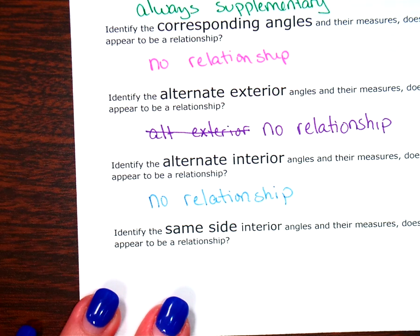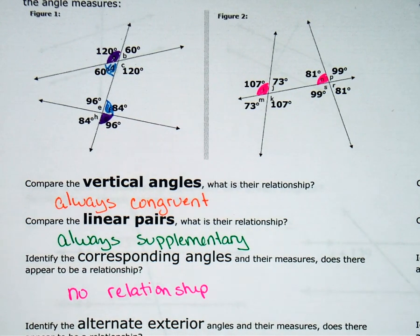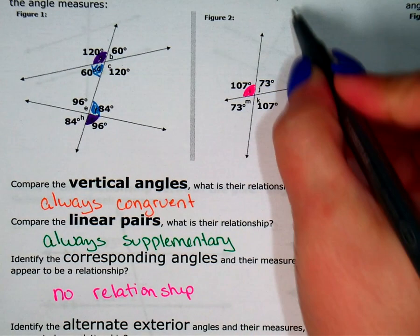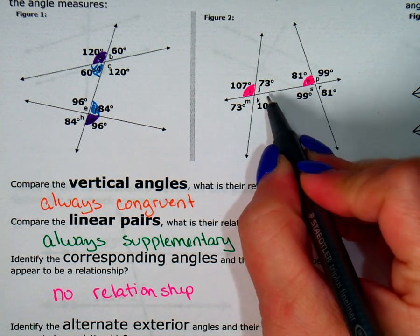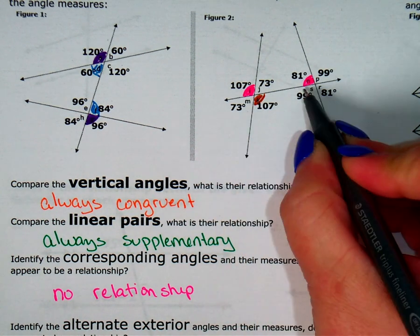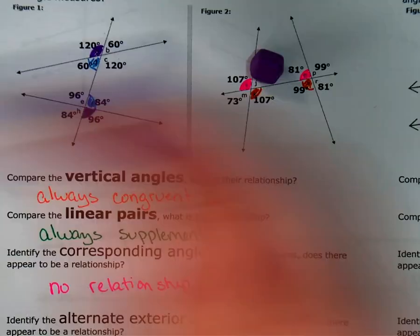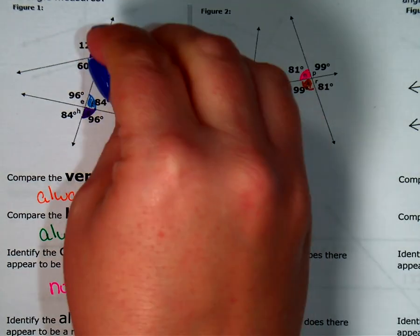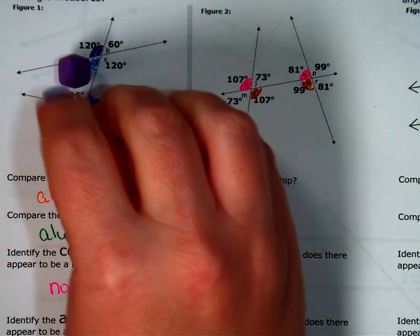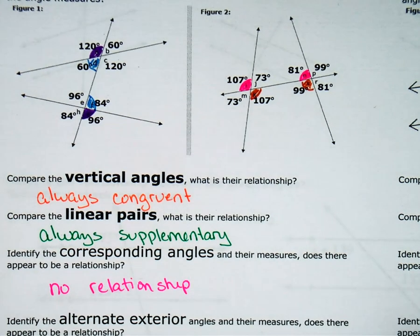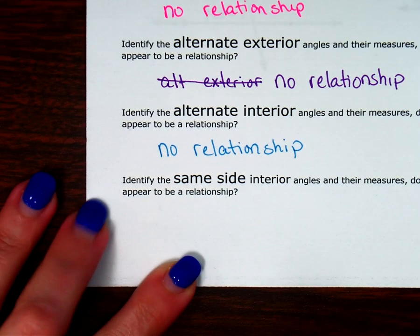Lastly, let's see if there's a relationship with same-side interior angles, which we also call consecutive interior angles. That's the two angles inside the two lines on the same side of the transversal. 107 and 99 — that's about 206, so that doesn't work. The 73 and 81 — that doesn't work either. Over here, 120 and 84, and 60 and 96 — those don't really have a clear relationship. So there's no relationship with same-side or consecutive interior angles.